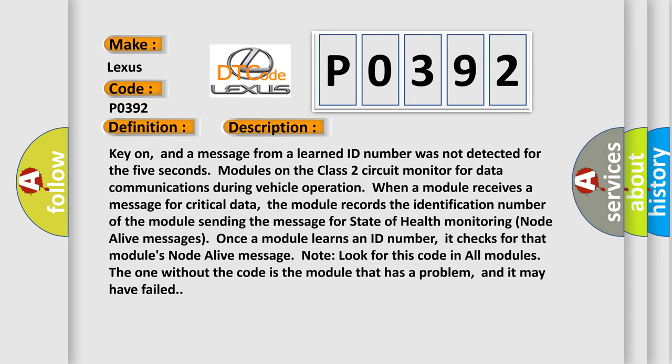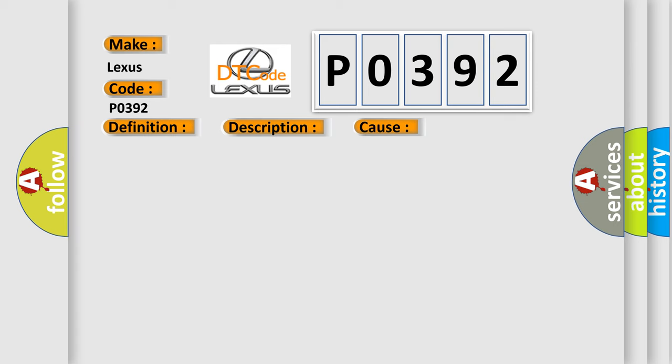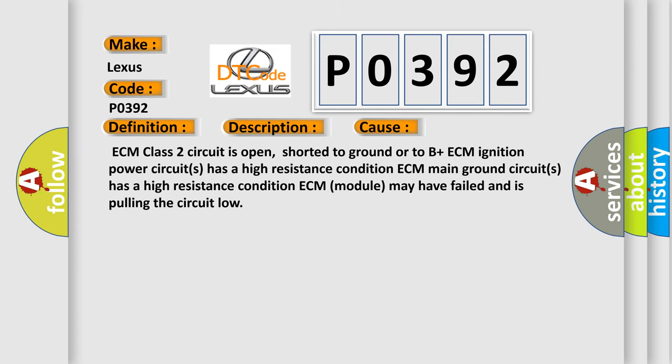This diagnostic error occurs most often in these cases: ECM class 2 circuit is open, shorted to ground or to B plus; ECM ignition power circuits has a high resistance condition; ECM main ground circuits has a high resistance condition; ECM module may have failed and is pulling the circuit low.